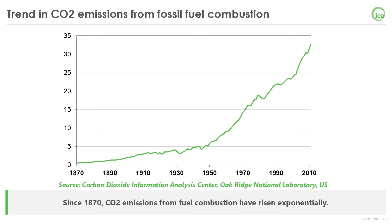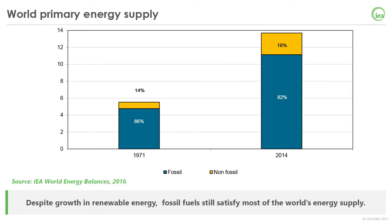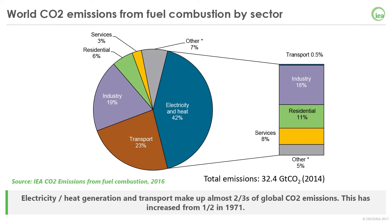So we know that we emit, but why do we emit more and more? The reason is because we need energy, and we need a lot more energy than we used to. On the left, you can see the total primary energy supply in 1971, split between energy from fossil fuel and non-fossil fuel origin. On the right, the same thing in 2014. Although the non-fossil fuel sources have increased tremendously, the fossil part is still covering the large majority of the demand, and it has almost tripled in absolute terms between these two dates. Electricity and heat generation and transport account for almost two-thirds of global CO2 emissions.